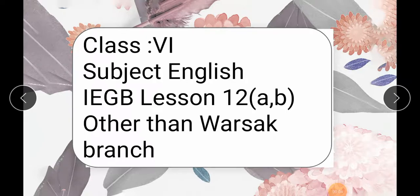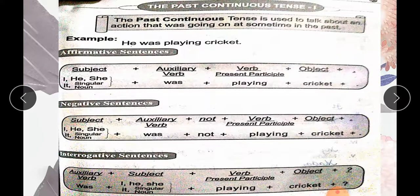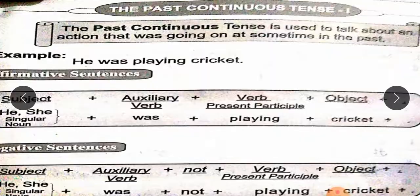Bismillahirrahmanirrahim. Assalamu Alaikum students. This lesson is for the Classic subject English. In this lesson, in the Ikra English Grammar Book, we will learn about Lesson 12, Part A and Part B — Past Continuous Tense Part 1 and Part 2. This lesson is for Varsak Brand students, so let's come to our first topic: Past Continuous Tense.